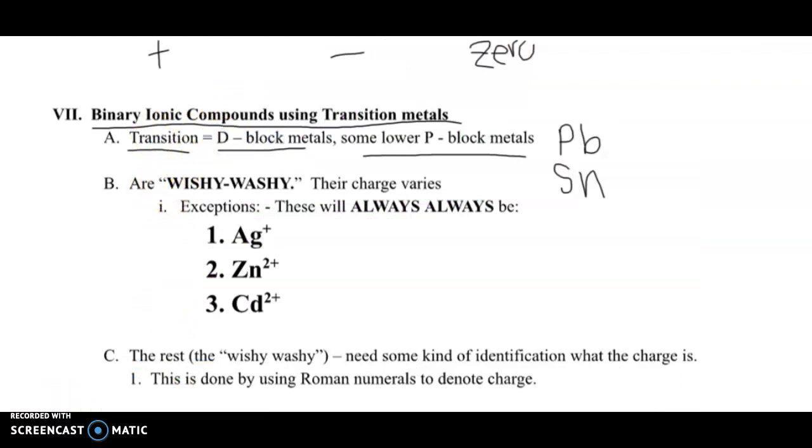Okay, so all of these in the D metal block, they are wishy-washy. That means they can have multiple charges. There are three exceptions, though, which I briefly talked about in the other video. We have silver, zinc, and cadmium. So let's go through and figure out why do those always have their certain charges.